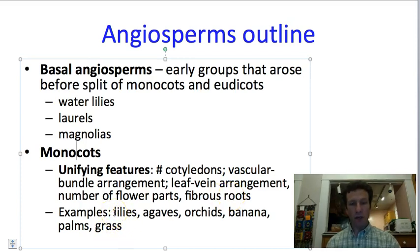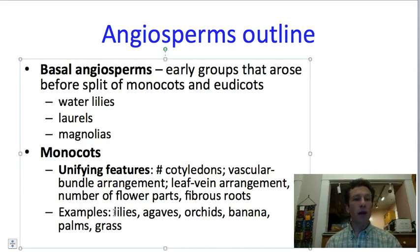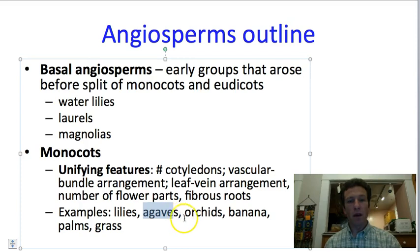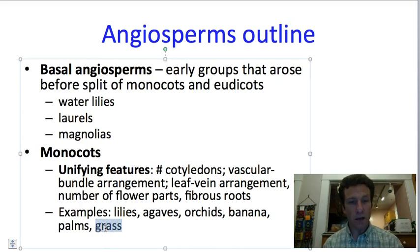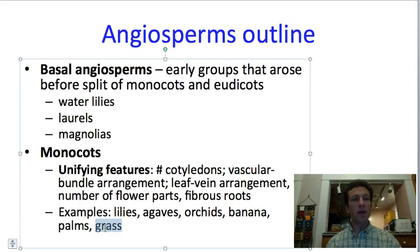We'll then look at several examples — a tour of the group. We will look at lilies, which many of you dissected in flower labs. We'll look at agave, as well as orchids, banana, palms, and grass. Grass may sound uninteresting, but in fact it gives us all of the grains that we eat, and so it's an incredibly important group.